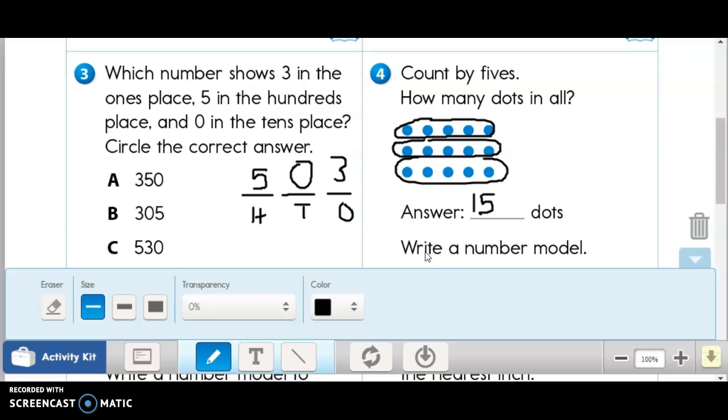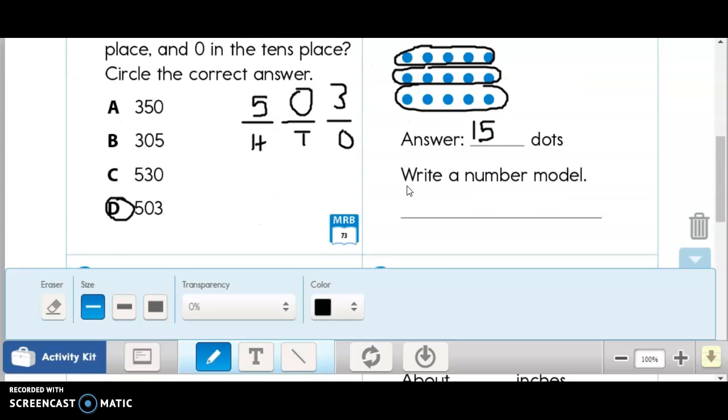And that says here, write a number model. Well, there's one, two, three. Three in that row, three rows. And one, two, three, four, five. Five in that row. So that's like saying five plus five plus five. And I know that repeated addition is the same as multiplication.